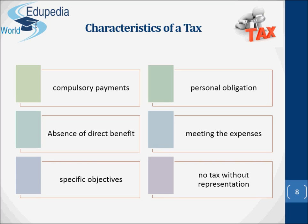Moreover, certain taxes are imposed on specific objectives. For example, tax on petrol to reduce consumption, and tax on luxuries so as to divert resources for the production of essential commodities. Finally, there is no tax without representation — this means that proposals regarding taxes are to be sanctioned in the respective assembly of elected representatives.